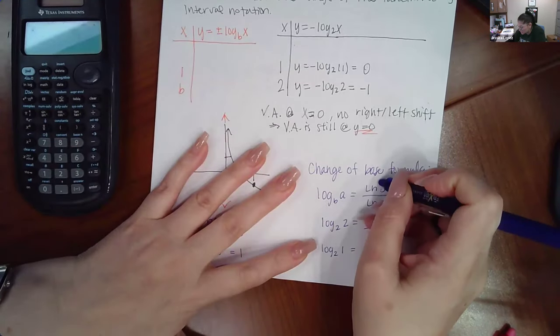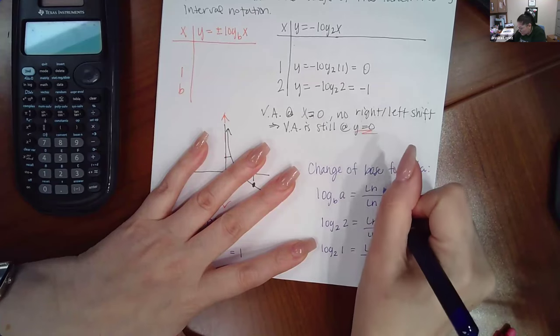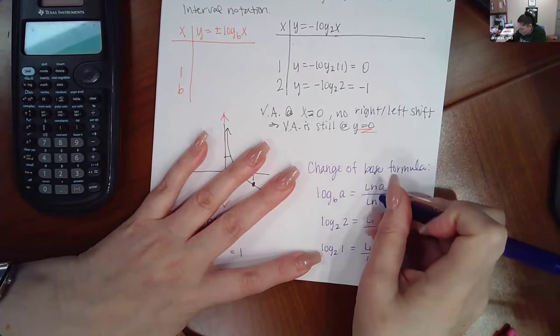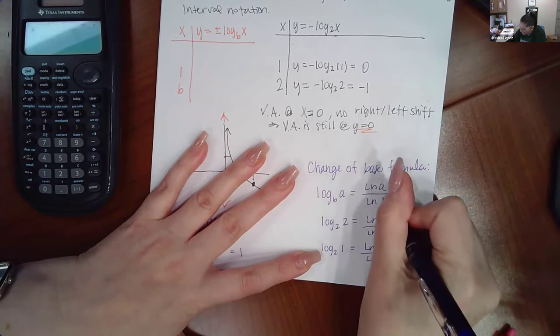I'm sorry, I put these backwards. That's why. It's ln of the argument over ln of the base, a then b. Here, it didn't matter because the argument is two and the base is two.